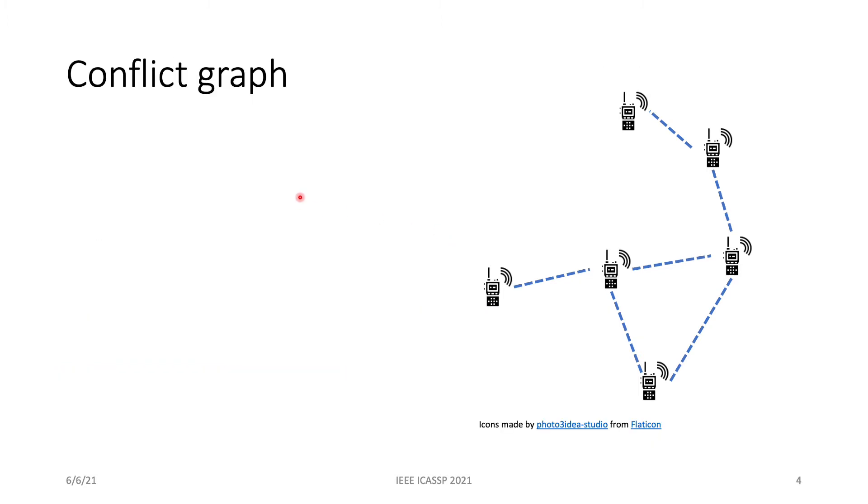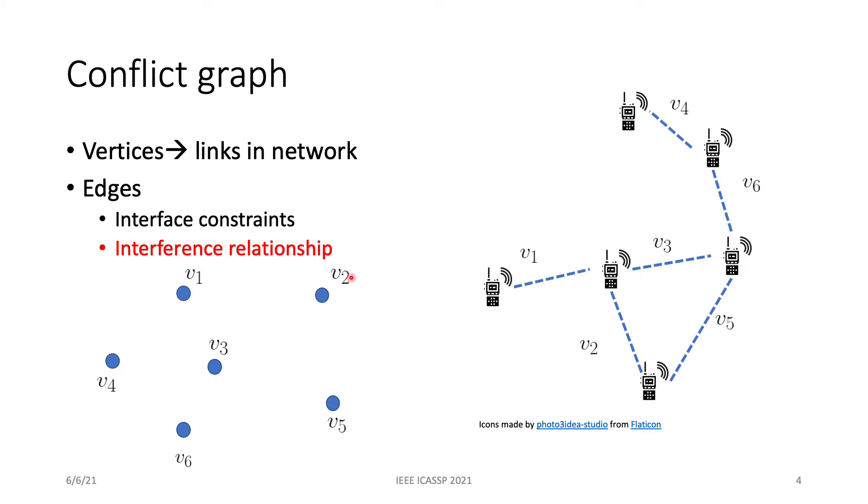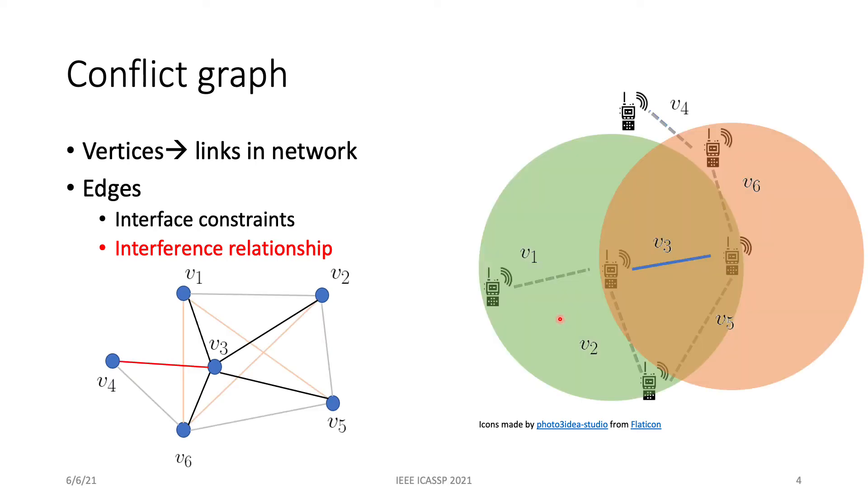To schedule the links, we first need to build a conflict graph. A vertex in the conflict graph represents a link in the wireless network. Here, we use v1 to v6 to denote these links. The edges in the conflict graph capture interface constraint and interference relationship. For example, link v3 covers all the other links in its radio footprint, so it's connected to all the other links in this conflict graph.